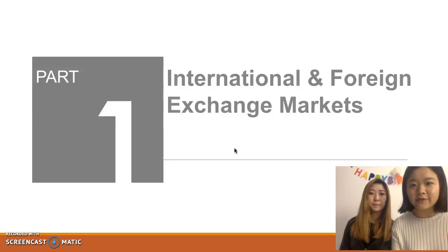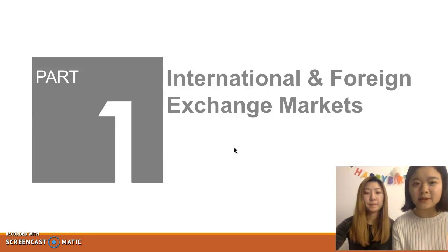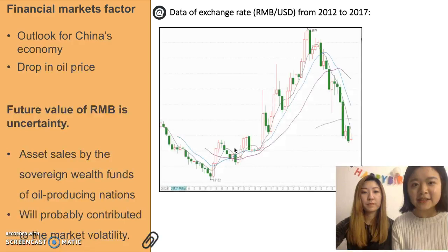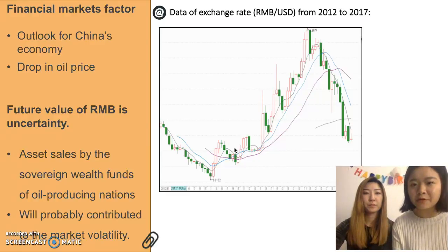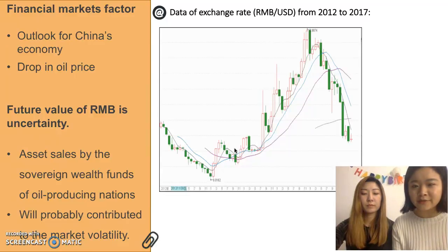Concerns about the outlook for China's economy and drop in oil price has been a significant driver of the financial markets recently. This causes balance price declines and the currencies of commodity exporters depreciate. Capital flows out of China because the future value of the renminbi is uncertain and cannot be predicted, even decreased in its foreign exchange reserve.